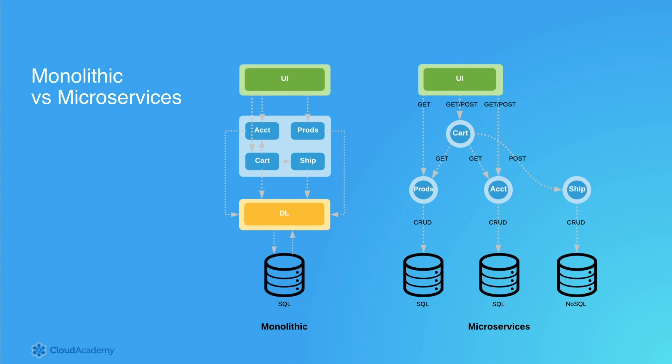Each individual microservice can be developed independently of every other microservice, allowing for polyglot style development and allowing scaling per microservice. Finally, each microservice can be paired with its own different flavour of database best suited to the microservice's specific needs — for example, pairing a microservice with a SQL database versus a NoSQL database versus a graph-based database.